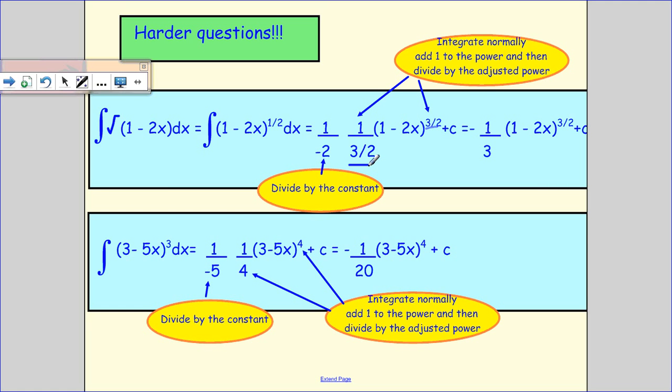And, of course, when I divide by 3 over 2, it's the same as multiplying by 2 thirds. And the 2 and this 2 would cancel to give me minus 1 third brackets, 1 minus 2x, to the 3 over 2 plus c. Check your fractions. Make sure you understand that.